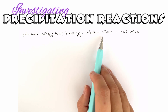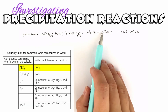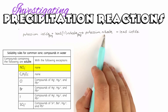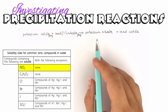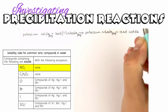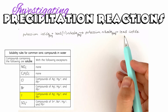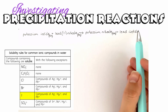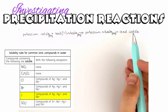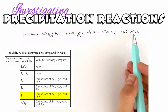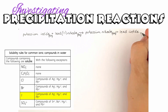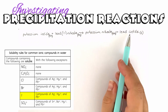Let's determine which species forms the precipitate using our solubility rules. Looking at nitrates: all nitrates are soluble with no exceptions, so potassium nitrate is going to be aqueous. Looking at lead iodide: iodides are soluble except for silver, mercury, and lead iodide. Lead iodide is one of the exceptions, so it's going to be a solid — that's our precipitate.